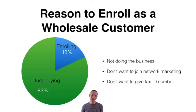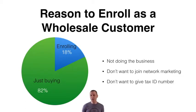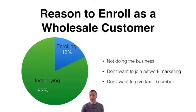So why would you enroll someone as a wholesale customer? It turns out 82% of people who join doTERRA are just buying essential oils — they're not enrolling anybody. Only about 18% of people actually enroll at least one person during the lifetime of their account. So 82% don't want to join network marketing, and they may not want to give up their tax ID number, which is now a requirement to open a wellness advocate account. It used to be optional, but now you're required to give a tax ID number to open a wellness advocate account.